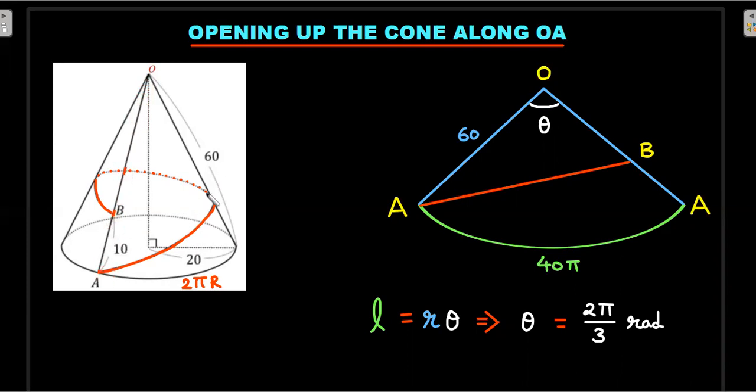Take that birthday cone and cut it along the slant height OA, then spread it on a piece of paper. When you spread it, this A can be divided into two points: left side A and right side A. There will be two OA's that you have spread. When you turn it back, this OA will coincide with this OA. This red curvilinear path will now become a straight line path. Since B is at a distance of 50 from OA, and OA is 60, this OB is going to be 50.